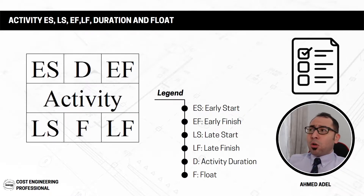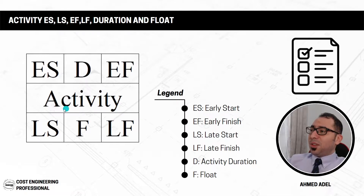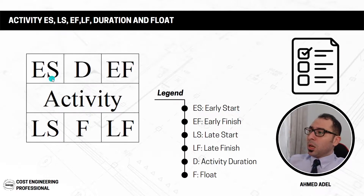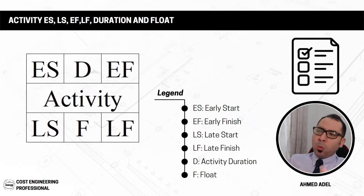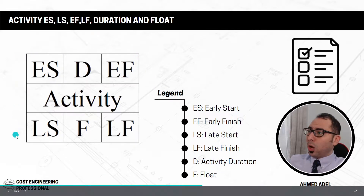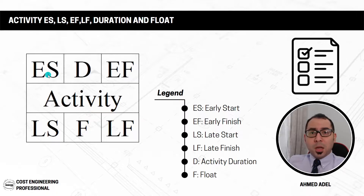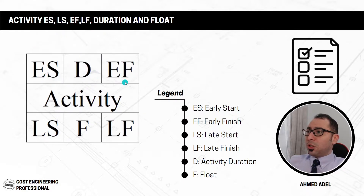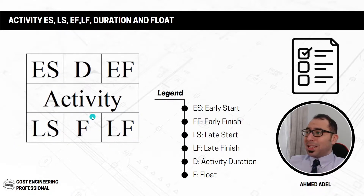When using CPM, each activity is represented in a node format. You will have the activity name in the center. The early start (ES) goes in the top left, the duration in the top middle, and the early finish (EF) in the top right. On the bottom row you'll find the late start (LS), the late finish (LF), and something called the float. Let's now go through each of these definitions.